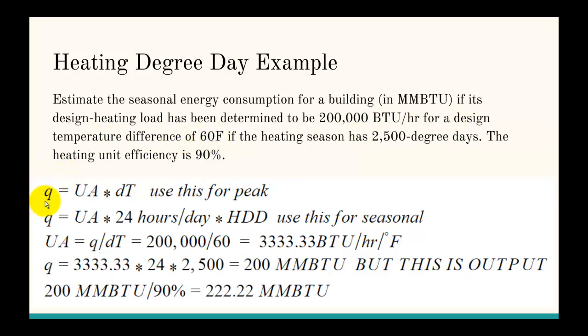A different version of the same formula is that the general version is Q equals UA times delta T. We know Q and we know delta T, so this third line here is figuring out what UA is.